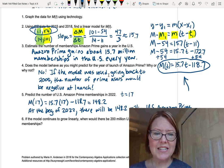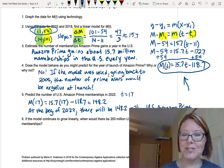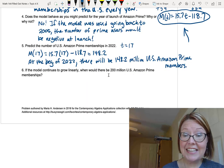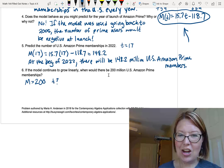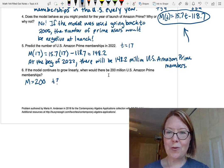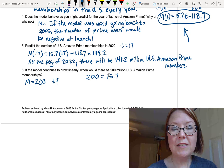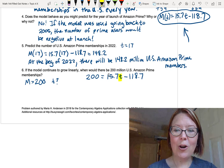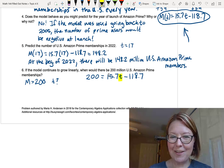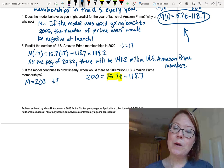The next question is, if the model continues to grow linearly, when will there be 200 million US Amazon Prime memberships? Well, now we're being given the M value. We know that M equals 200, and we want to know what time gives us that. So we're just going to solve the equation in the other direction. We're going to solve 200 equals 15.7 t minus 118.7. We want to solve for the variable that's there, that's the t value.